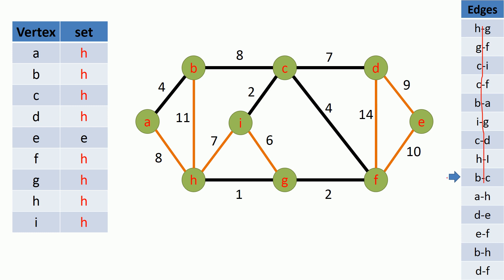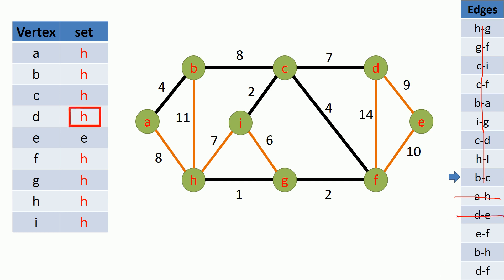The next remaining minimum weighted edge is the edge between vertex A and H. Both A and H vertex are currently belong to set H, therefore this edge will be discarded. The next remaining minimum weighted edge is the edge between D and E vertices. D vertex is currently belong to set H and E vertex is currently belong to set E. Therefore we can add this edge to our MST and union the sets by changing E vertex set to H. After this step all the vertices for this graph are in one set, so we don't have to consider the remaining edges and can stop. That's how we construct a minimum spanning tree using Kruskal's algorithm. In the next video we will look at how to implement this pseudocode.